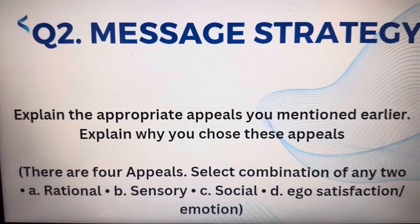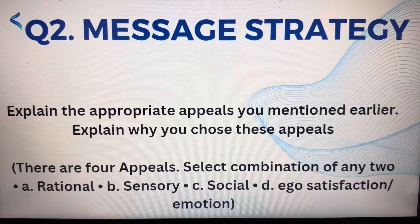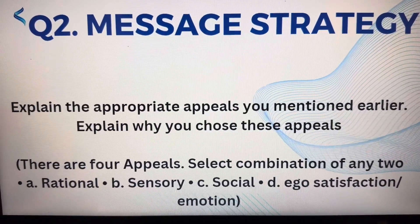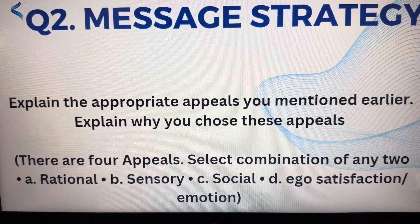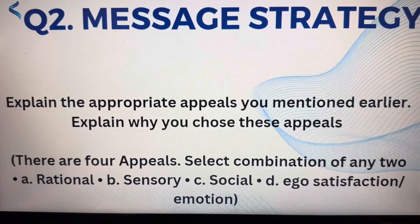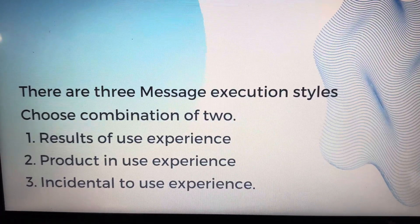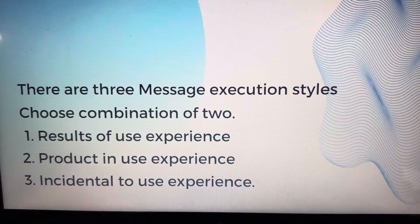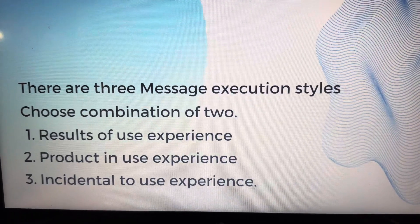We then move to the second question, which is about message strategy. Explain the appropriate appeals you mentioned earlier — you can choose two. Explain why you chose those two appeals. As we have studied in consumer behavior, there are four appeals, so choose a combination of any two. There are also three message execution styles — choose a combination of any two: results of use experience, product in use experience, or incidental to use experience.